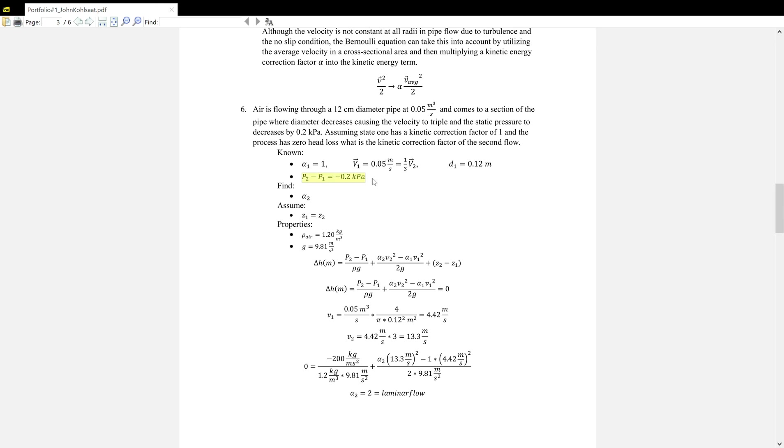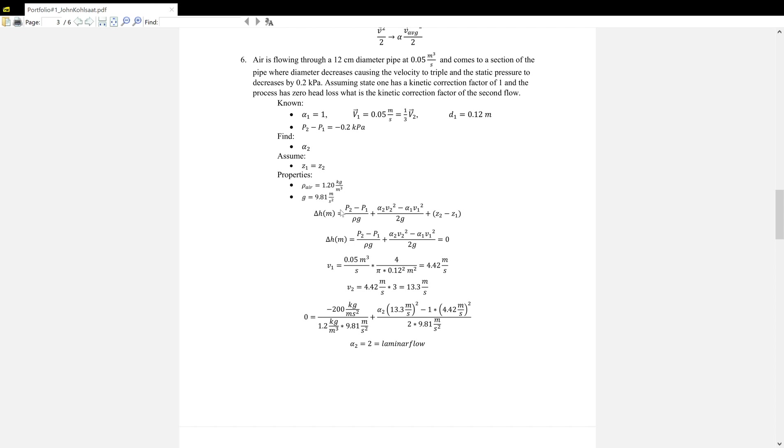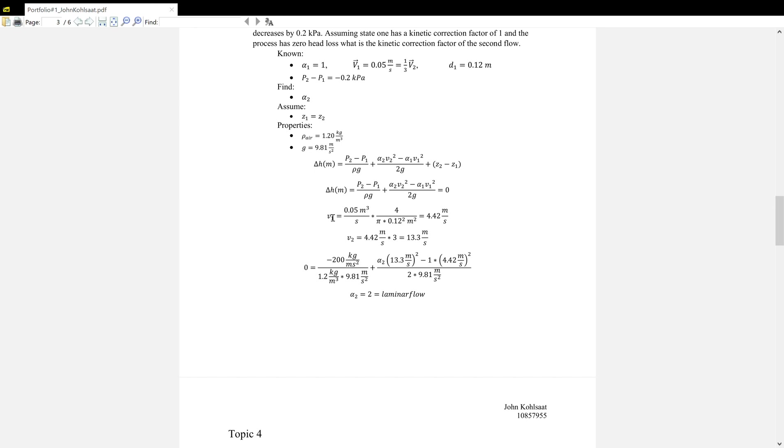We're given a lot in this problem. We're given the kinetic correction factor one, the volumetric flow one, the diameter of the pipe in state one, and then the difference in the pressure between state two and state one. We are told to find the kinetic correction factor for number two. We can assume Z1 equals Z2 because we're not given anything about that in the problem. Properties: density of air and g. Then we can use rearranged Bernoulli's equation to be state two minus state one. And then we can cancel out Z2 minus Z1.